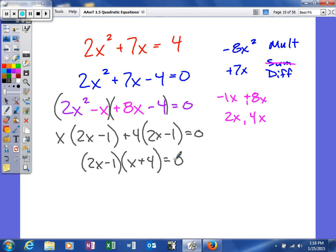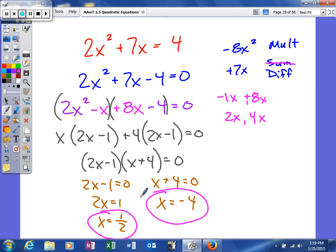Now, the new part in solving quadratics is we set each factor equal to 0 and solve. Once you get it in factored form, set each equal to 0 and solve. We add 1, divide by 2, and get one solution to be 1/2. Over here, you get x equals negative 4. It is a quadratic, so we should get two solutions, and we found those two solutions by factoring.